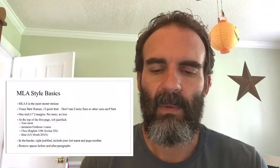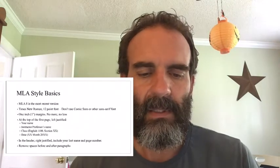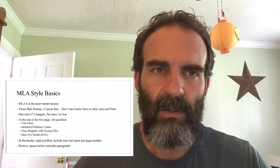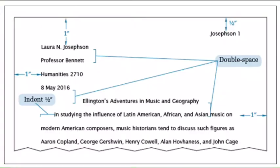In MLA, at the top of your paper you'll have a name block. In the header, right-justified, you'll have your last name and the page number. There are tons of tutorials online on how to do that. The name block includes your name, then the instructor's name — for me just put 'Abel,' that's fine.